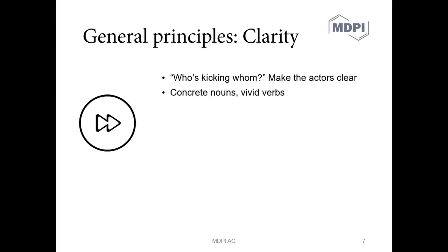Clarity is obviously very important and you can ask the question who's kicking whom? So that means when you write a sentence is it clear who's doing which part of the actions described in the sentence? Are the subjects and objects clear? Also think about using concrete nouns and vivid verbs. Why? Well it helps to create an image in the mind of your readers. If you use lots of abstract words and abstract concepts your readers might have to work hard to really understand what's going on. If you can use words that are related to real physical concepts it will help them to better imagine in their heads what you're trying to describe.